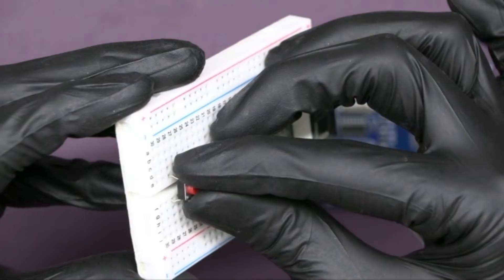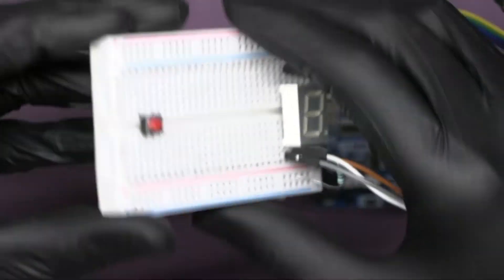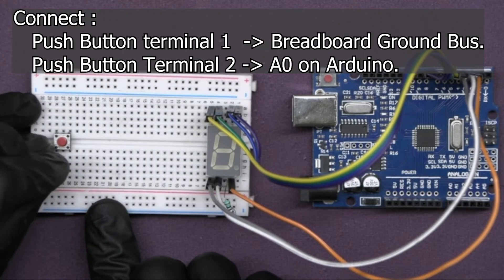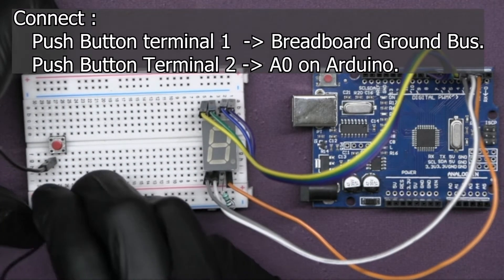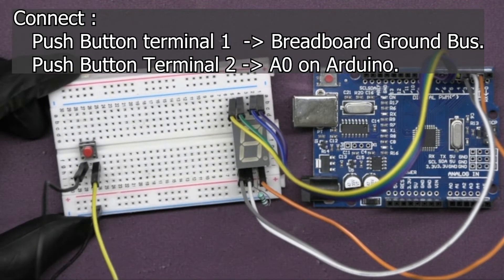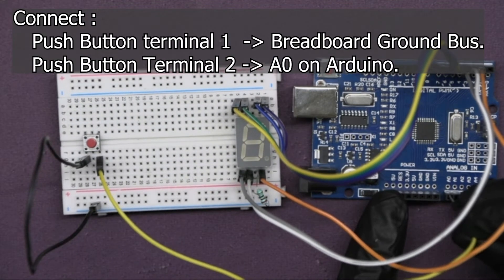Now insert the push button on the breadboard like this. Connect its one terminal to the ground bus on the breadboard and connect this terminal to analog pin A0 of Arduino.